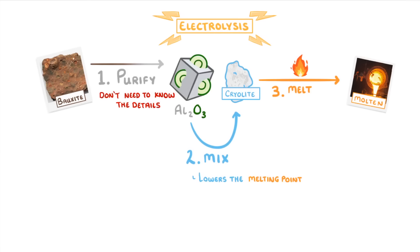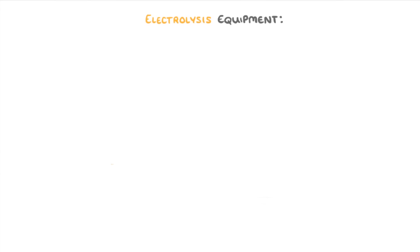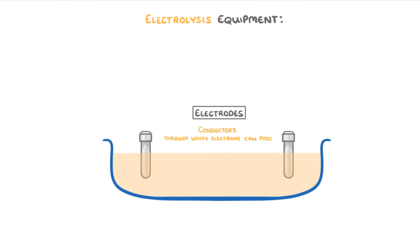Now that we have our molten mixture, we can set up our electrolysis equipment. So we need some sort of beaker to hold our molten aluminium oxide, which remember is our electrolyte. And we need our two electrodes, which are made of carbon, and act as conductors through which the electrons can pass.